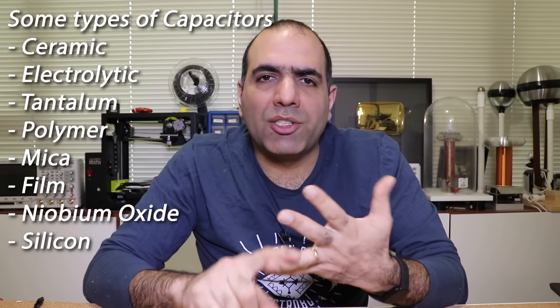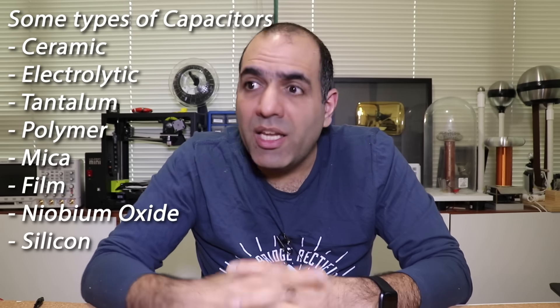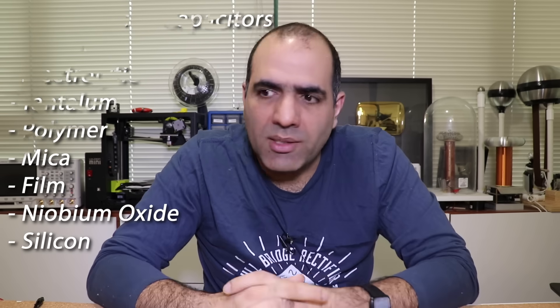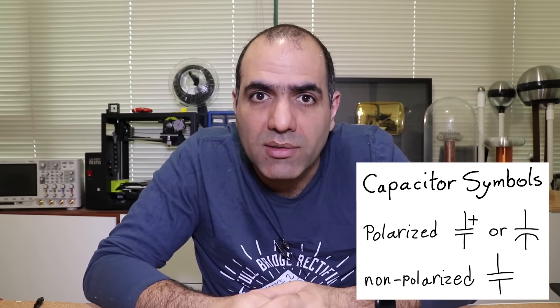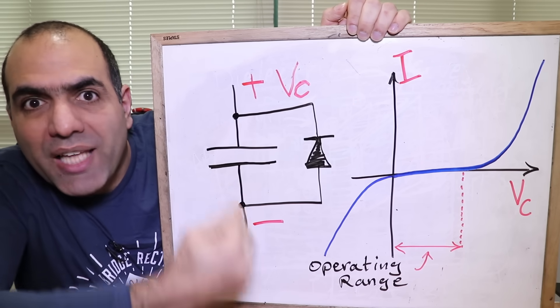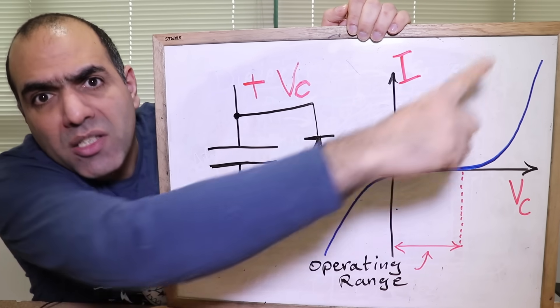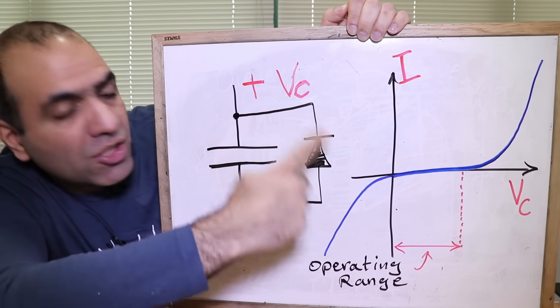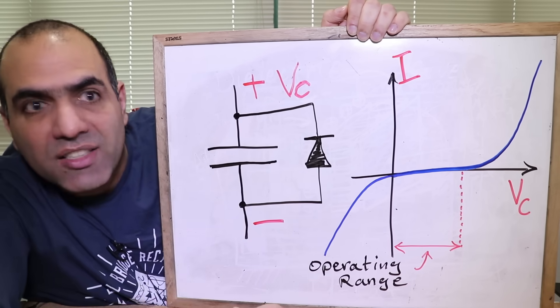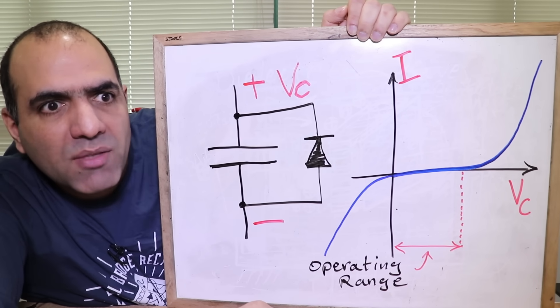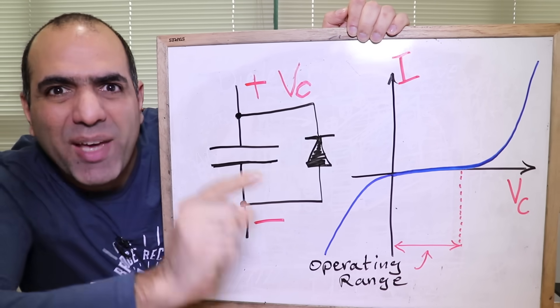See, capacitors are made with different structures, like ceramic, electrolytic, tantalum, or others. And each one has its own pros and cons. The chemistry and structure of some of them, like electrolytic or tantalum, makes them polarized. It's like having a very sh**ty diode across your capacitor. As soon as you put reverse voltage or too much positive voltage across your capacitor, it starts conducting extra current and blows up. Which makes for great pyrotechnics. Let's look at it again.